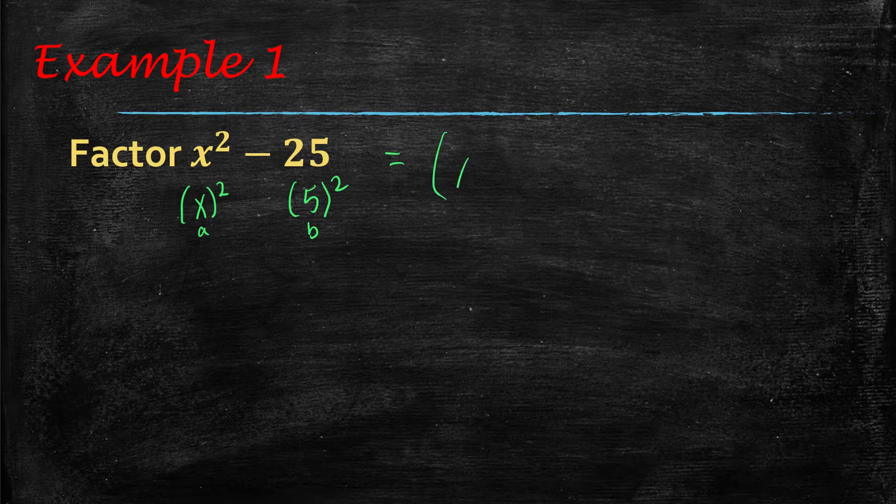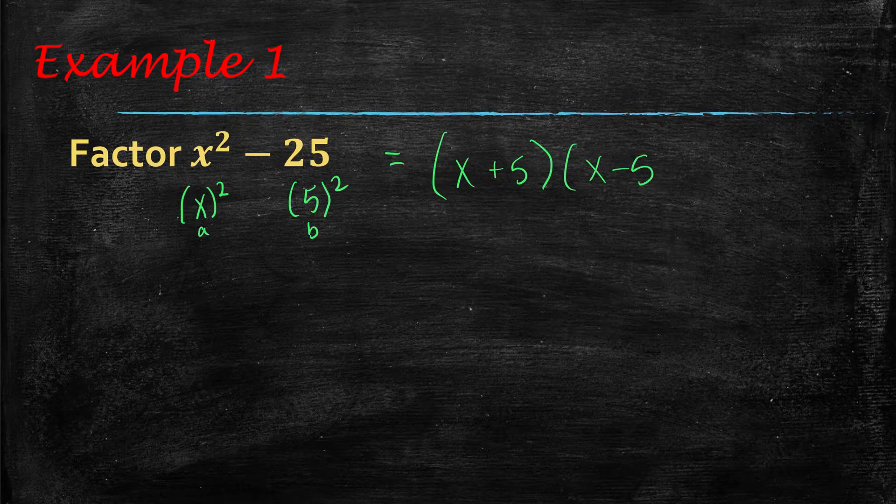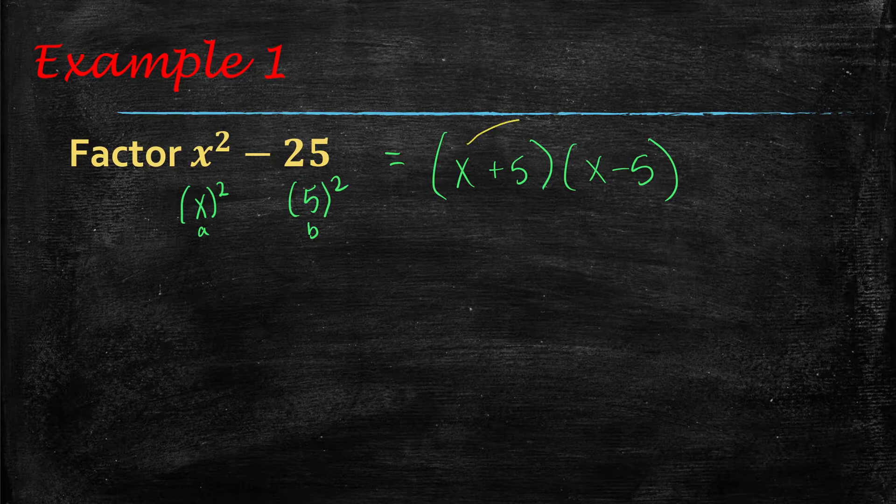we're going to have x plus 5, and then we're going to have x minus 5. Now, let me show you that this does, in fact, work. If you were to multiply this back together, you'd have x times x, which is x squared,